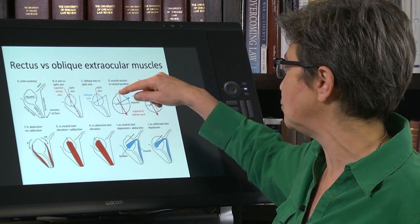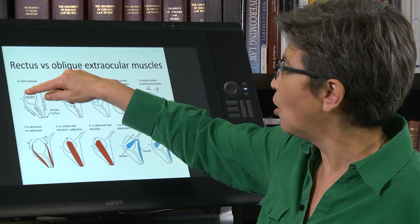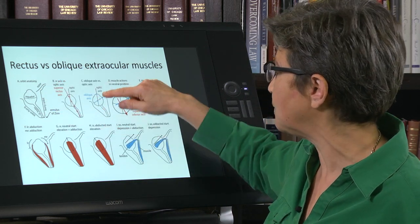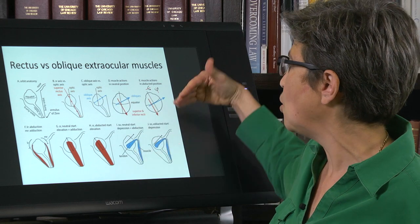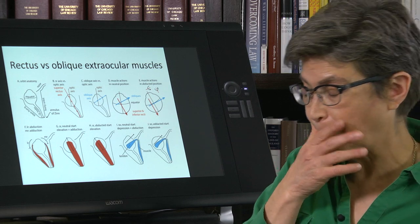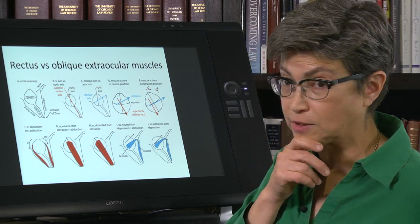It all has to do with how the muscles insert and what their angle of pulling is. And what you can see is that the rectus muscles are very close to the optical axis, not quite, but very close to the optical axis, whereas the oblique muscles pull orthogonal to the rectus muscles.